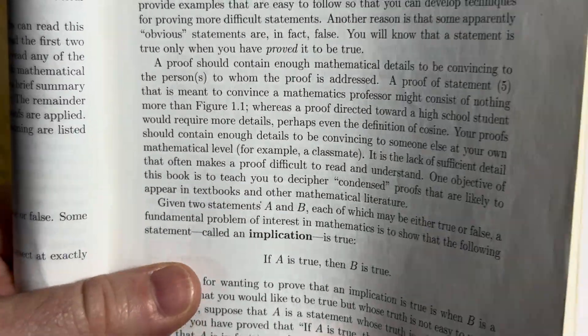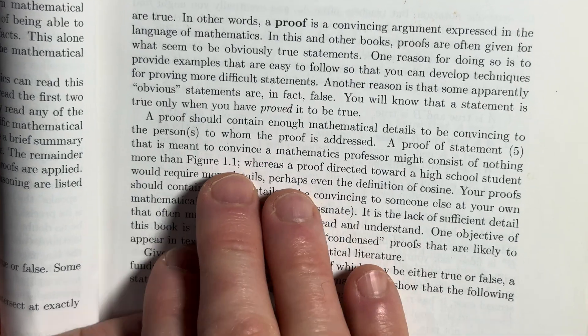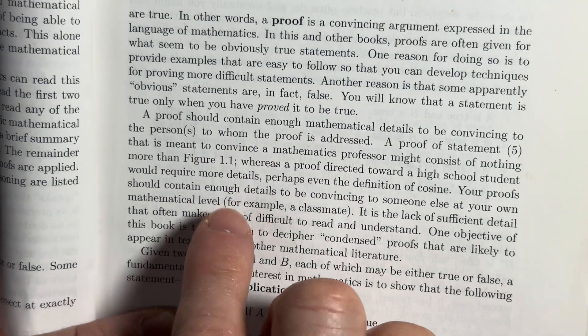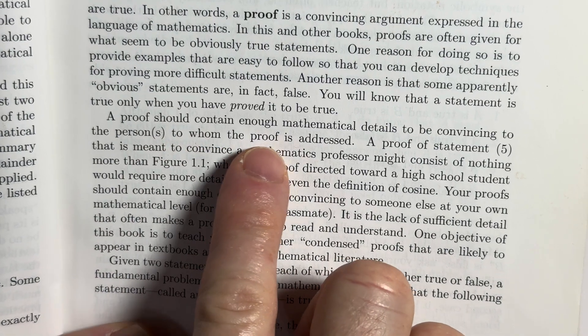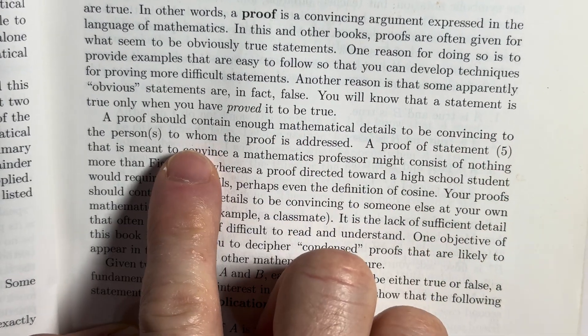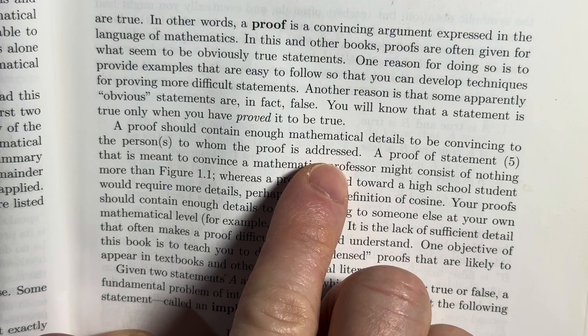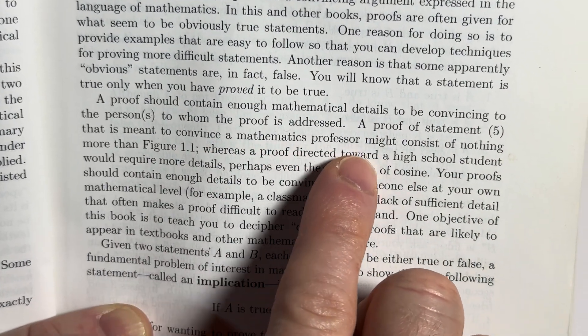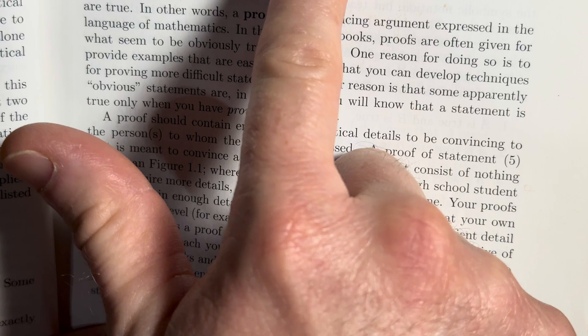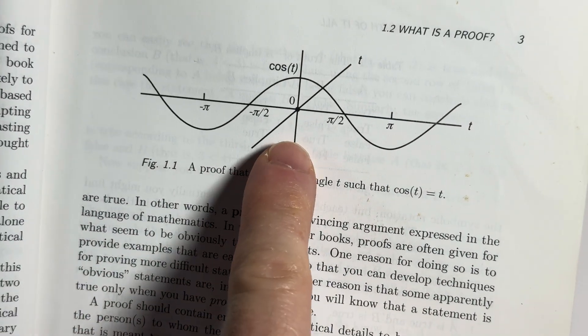And then here's where it gets really interesting. So I'm going to take the time to read this because this affects a lot of people who are studying mathematics. A proof should contain enough mathematical details to be convincing to the person to whom the proof is addressed. A proof of statement five that is meant to convince a mathematics professor might consist of nothing more than figure 1.1.